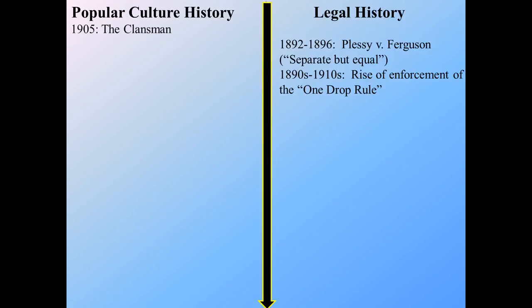As we get into the popular culture history, in 1905 a book comes out called The Clansman by Thomas Dixon. This is a book that celebrates the rise of the Ku Klux Klan in the South. It's a popular novel — people enjoy this romanticized idea of the South. We have to remember this is 50 years after the end of the Civil War, and it portrays Caucasians coming back and saving themselves from African-Americans who were supposedly ruining the South in the 1860s and 1870s.